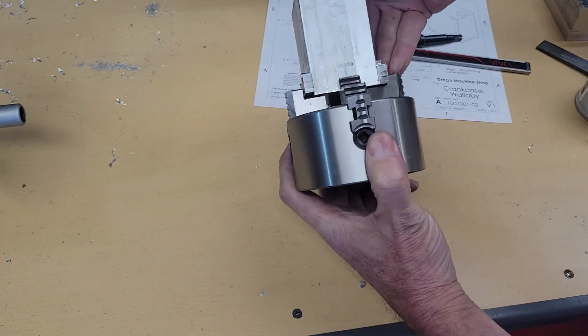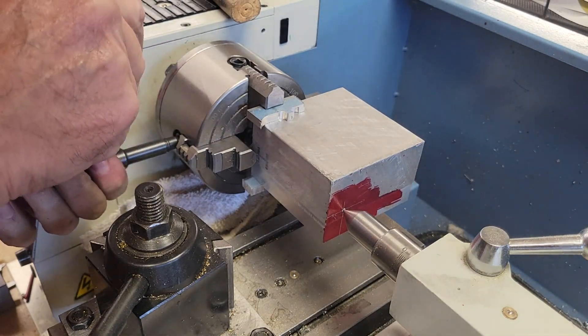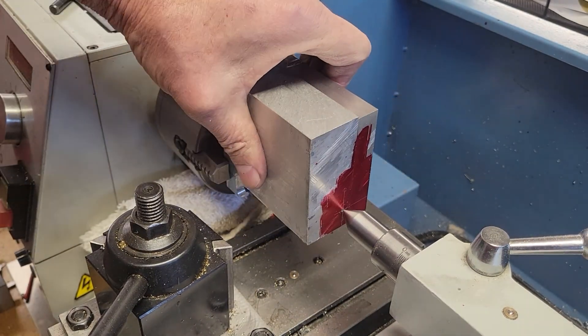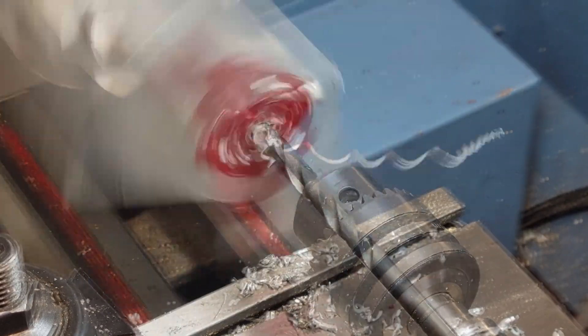We load the work piece into the four jaw chuck, offsetting it to bring the camshaft hole in alignment with the axis of the lathe. We drill progressively larger holes within a sixteenth of an inch of final size.